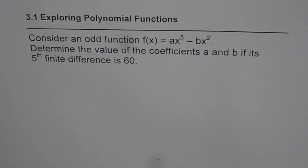I am Anil Kumar and here is a thinking question on exploring polynomial functions, advanced functions, grade 12. Consider an odd function f(x) = ax^5 - bx^2. Determine the value of the coefficients a and b if its fifth finite difference is 60.